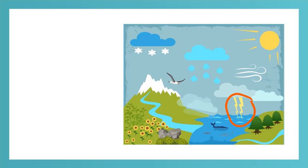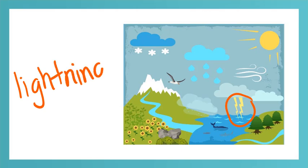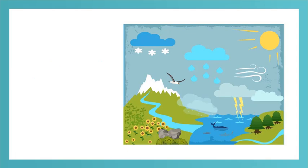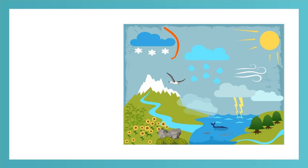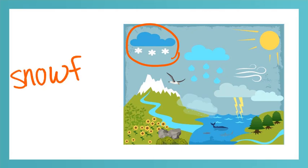And look what's coming out of these clouds. Lightning. L-I-G-H-T-N-I-N-G. Lightning. What do we usually also see when there's lightning in the sky? Did you say rain? Yep, that's right. We have rain. R-A-I-N. Rain. You might also see snowfall. S-N-O-W-F-A-L-L. Snowfall.